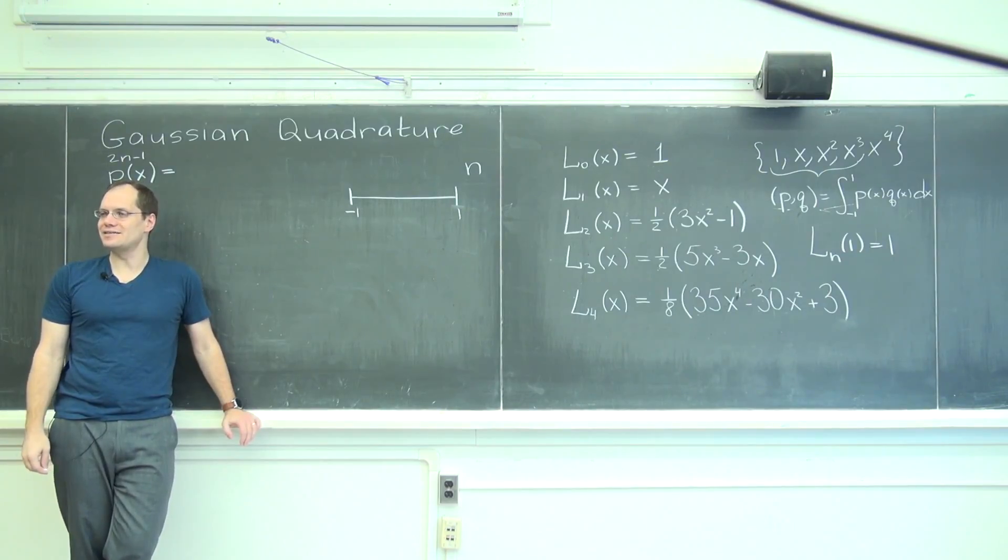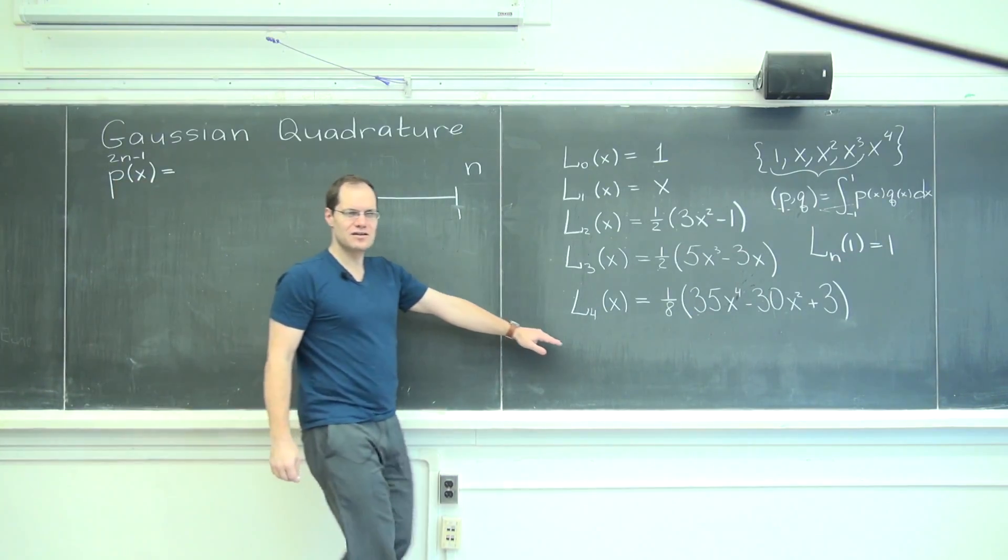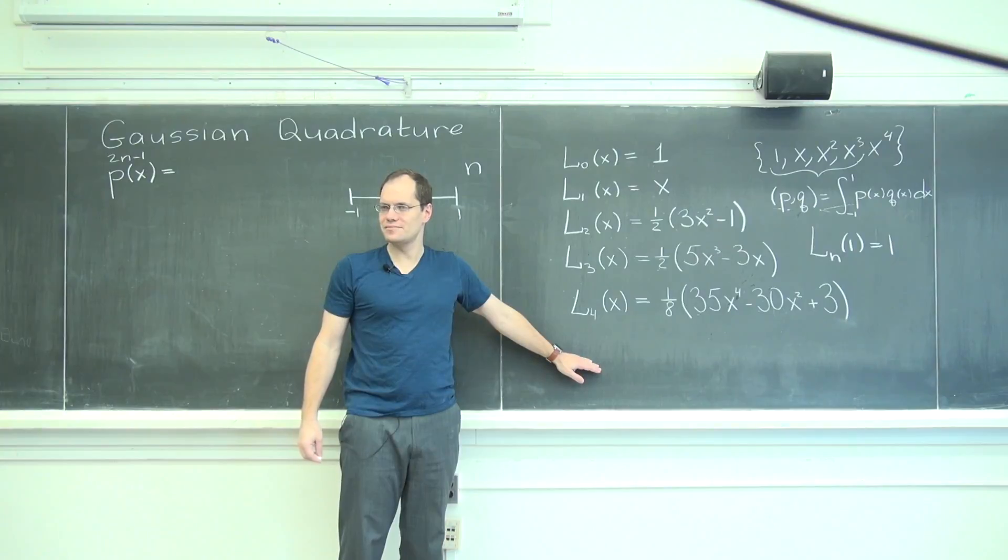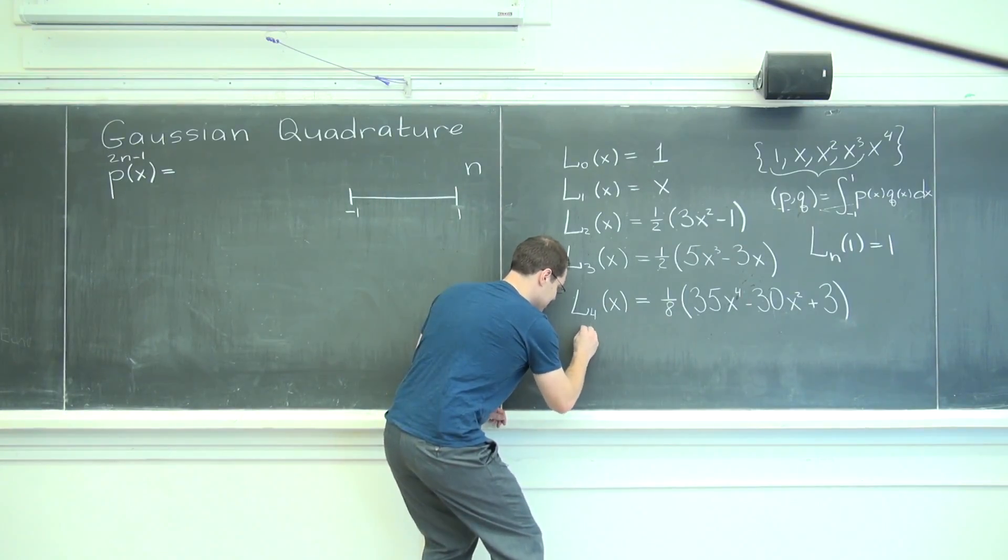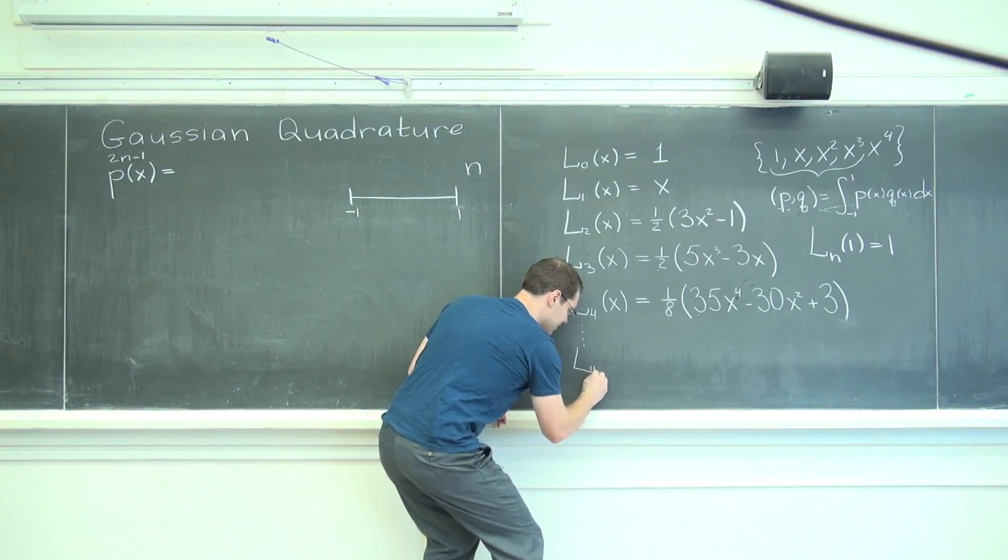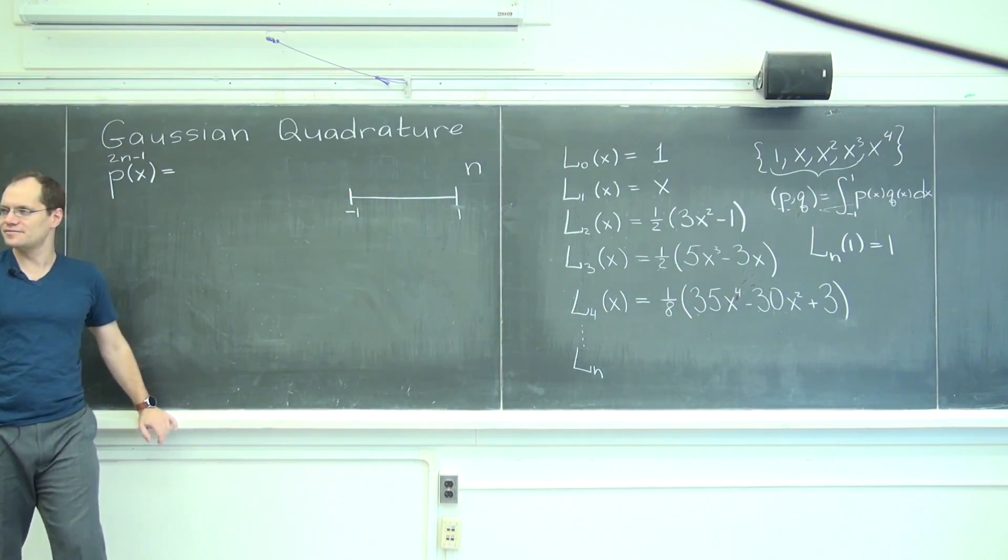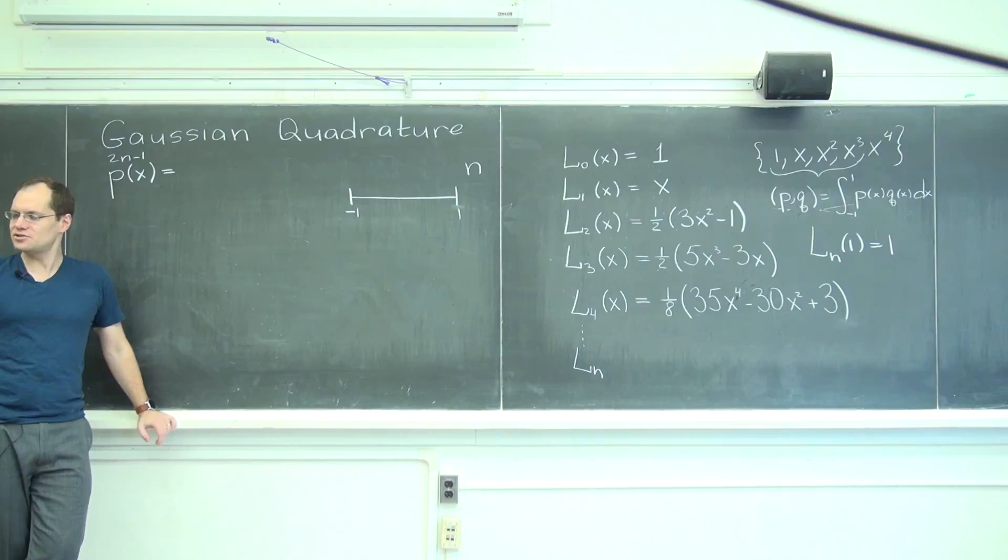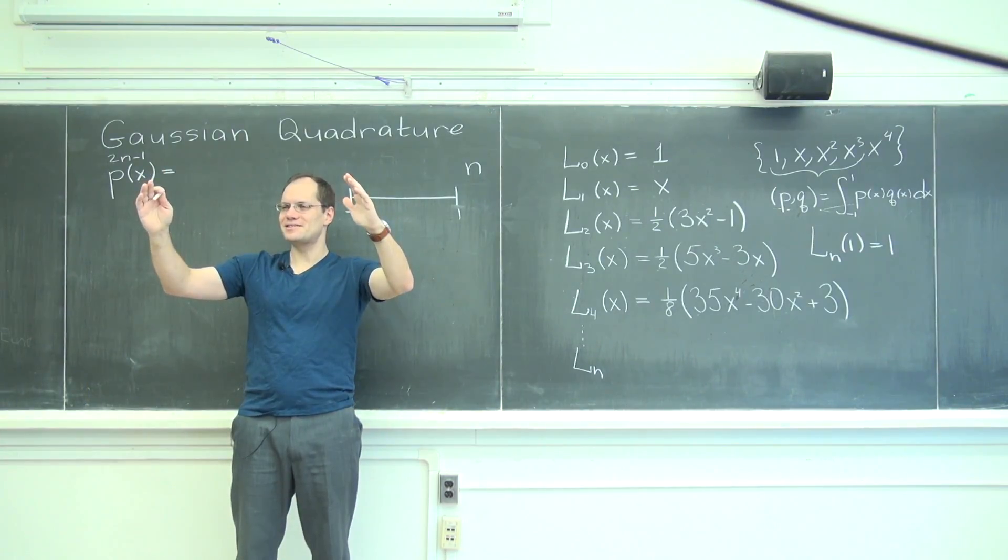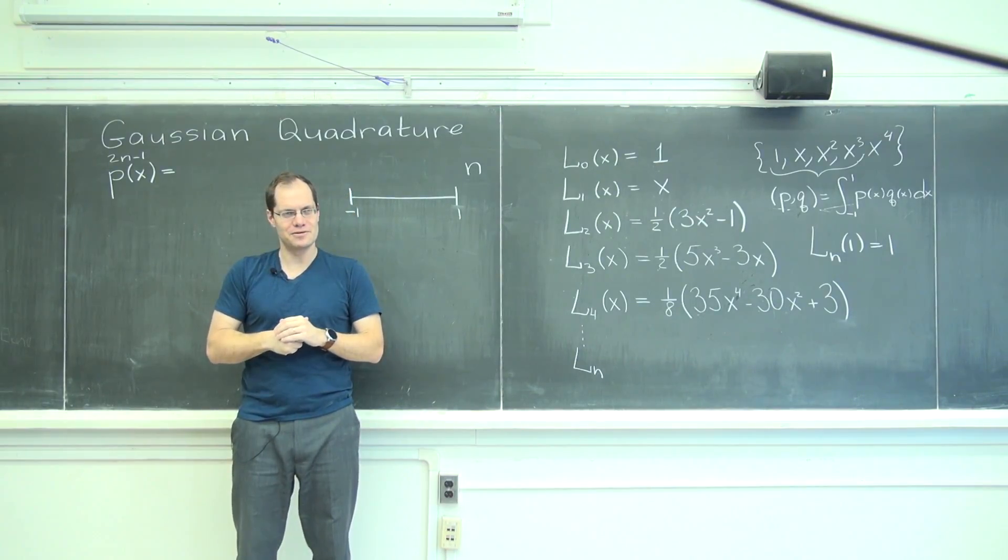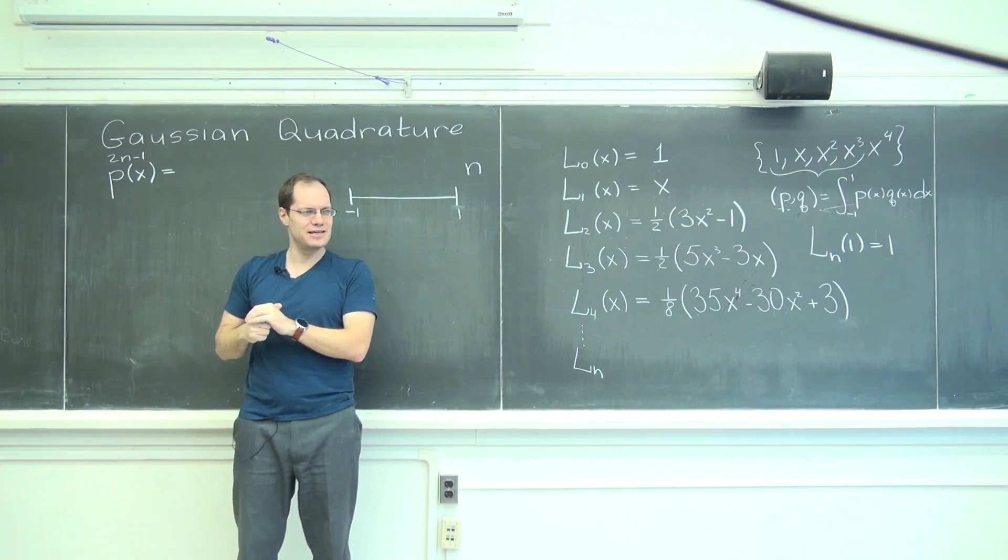So I will divide it by the nth Legendre polynomial and you'll see why in a moment. So down there somewhere, there is the nth Legendre polynomial. It's of degree n. Do you remember polynomial division? If you divide an 11th degree polynomial by a fourth degree polynomial, what degree polynomial do you get?